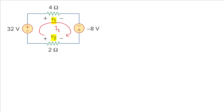We are asked to find v1. V1 is i1 multiplied by the resistance, which is 4 ohms, so we will have v1 equal to 4i1.